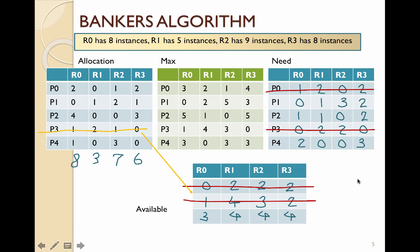One valid safe sequence is P3, P0, P1, P2, P4. The important part of this sequence is that P3 must come first, because when we initially calculated the available vector, P3 was the only process whose need could be satisfied by the available resources.